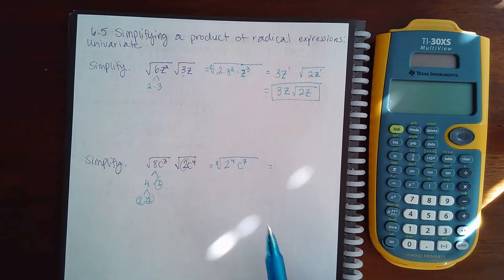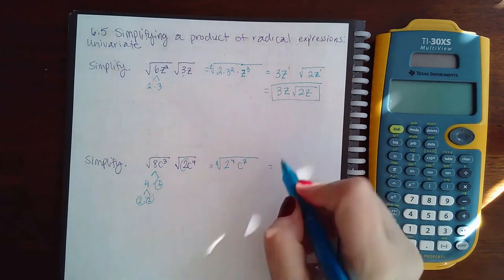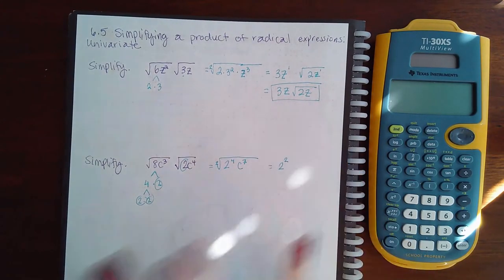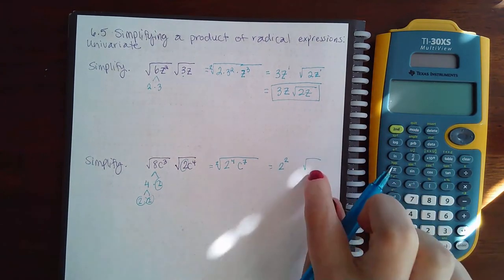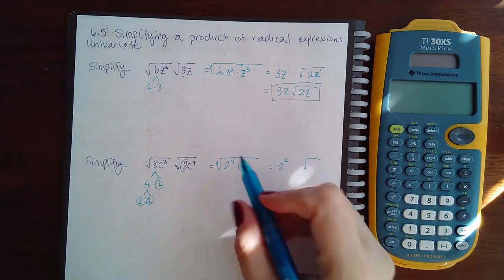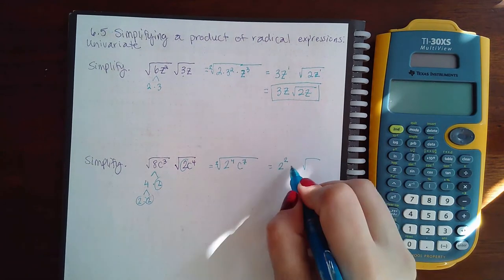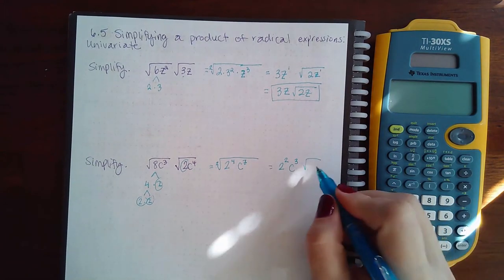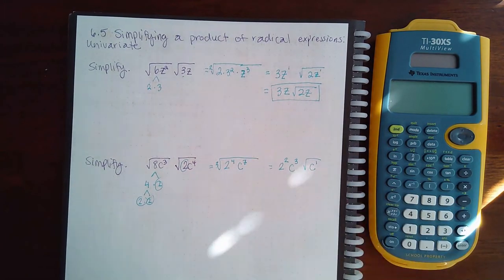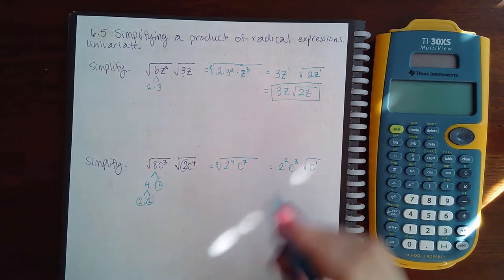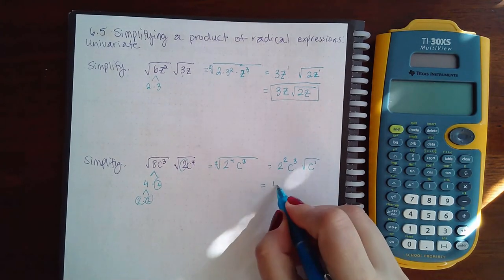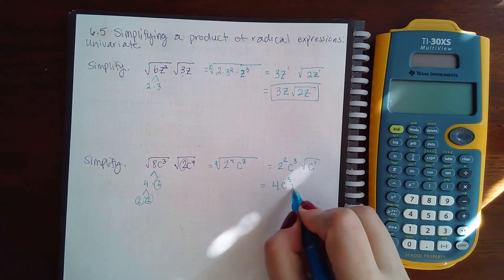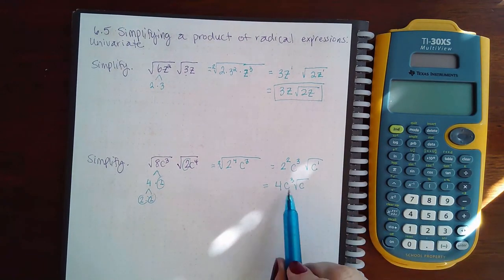Again, my index is 2. 2 goes into 4 two times with none left over, so I will not have any 2s in my radical. 2 goes into 7 three times but I will still have 1 left over on the inside. Then I can clean this up by actually squaring that 2 and then not writing the exponent here.